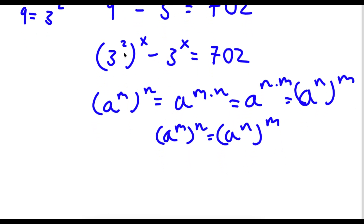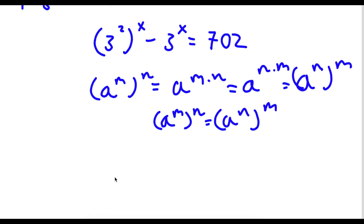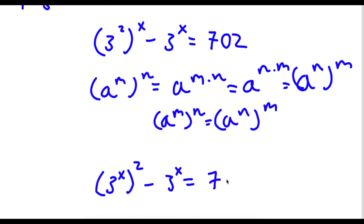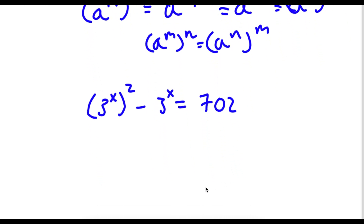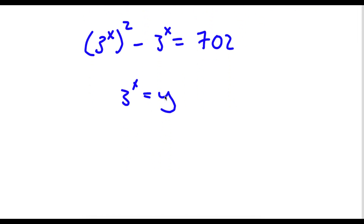So in this case, I have 3 to the power of 2 to the power of x, and I'm going to rewrite that as 3 to the power of x to the power of 2. So now I'm going to set 3 to the power of x equal to y. So if I replace 3 to the power of x with y, I get y squared minus y is equal to 702.